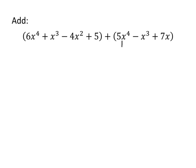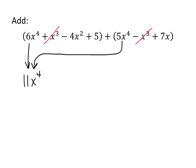For example, here we see a 5x to the fourth and a 6x to the fourth. And if we combine those together, 6x to the fourth plus 5x to the fourth together make 11x to the fourth. Typically we go from the highest power of x down. So we did the x to the fourths, now let's look at x cubed. Here we have positive x cubed, and here we have negative x cubed. When we add positive x cubed and negative x cubed, we actually get 0. This positive x cubed cancels out with this negative x cubed.